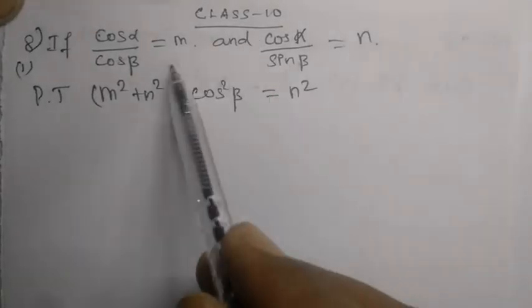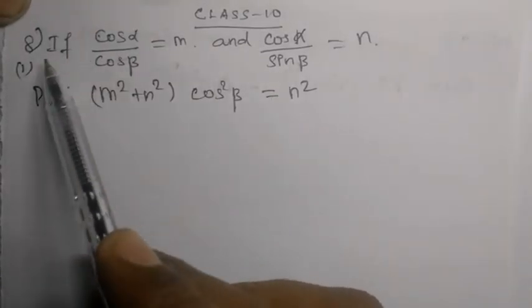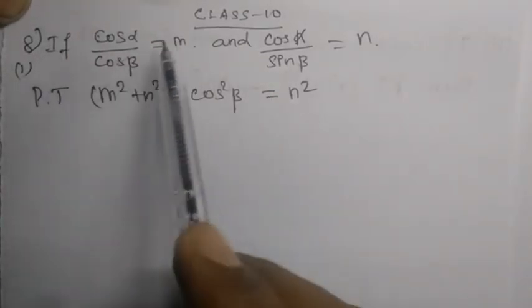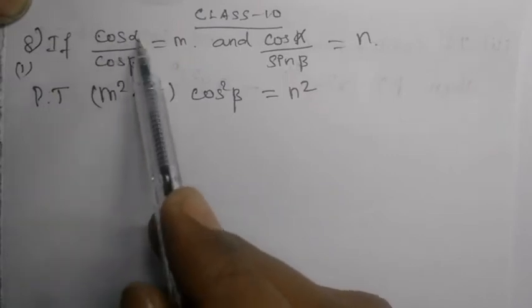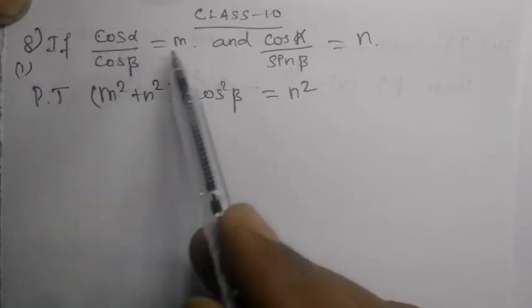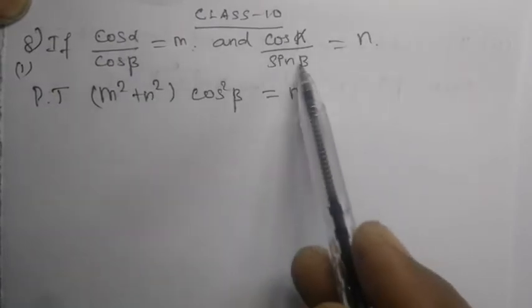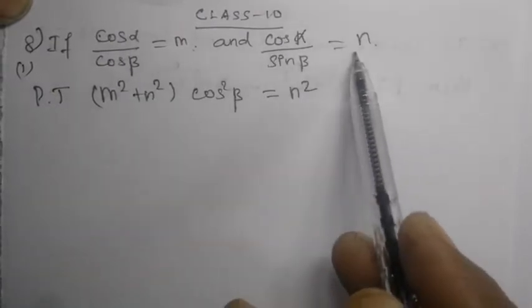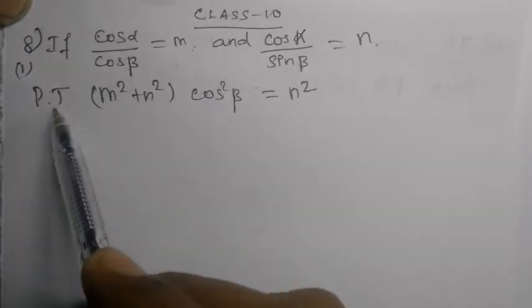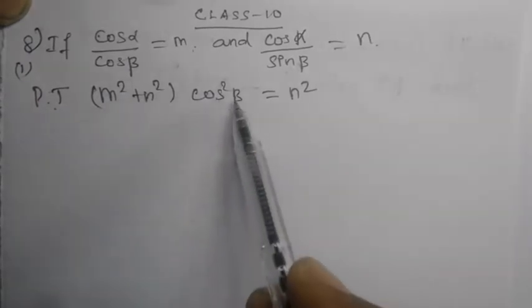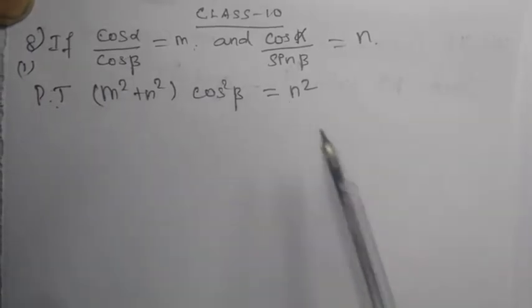Welcome students! Class 10 mathematics, question number 8, exercise 6.1. Given: cos α divided by cos β is equal to m, and cos α divided by sin β is equal to n. Prove that m squared plus n squared cos squared beta is equal to n squared.